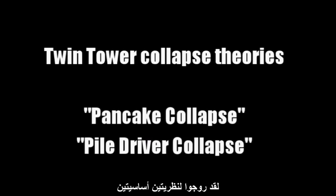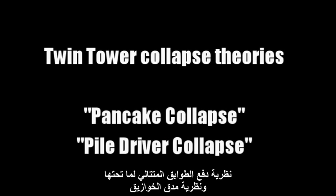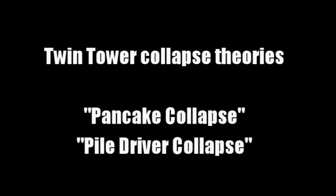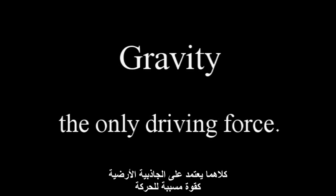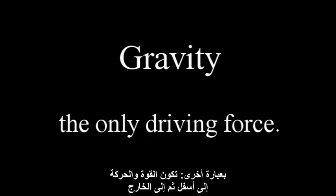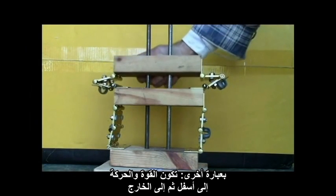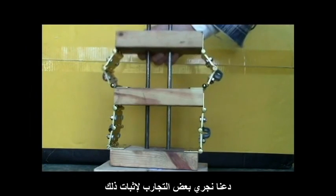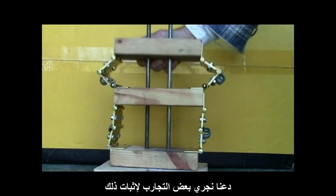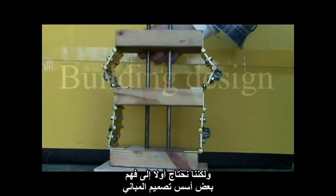There were two primary theories that were promoted: the pancake collapse and the pile driver collapse. Both rely on gravity to be the driving force for the two motions. In other words, the force and motions were down then out. Let's conduct some experiments to verify this, but first we need to understand some basics about building design.